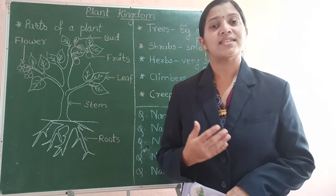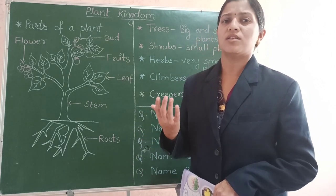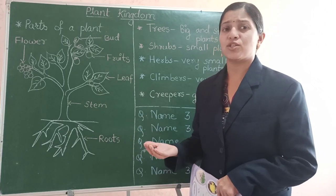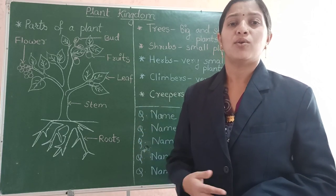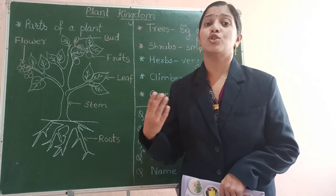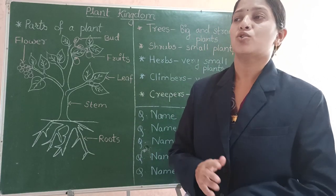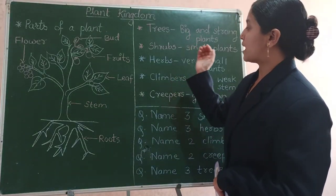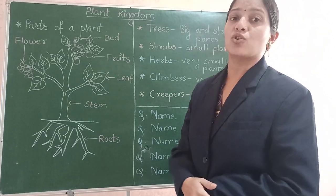Some plants are big and tall, some are small and short. Some plants grow in soil while some plants grow in water. Today we are going to see all the types of plants.